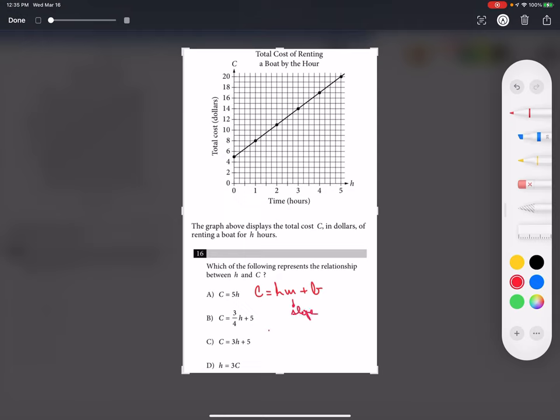Slope is the variation of the Y-axis, that is C, over the variation of the X-axis, that is H. Let's pick two points: this point as my final and this point as my initial.